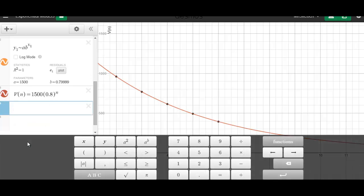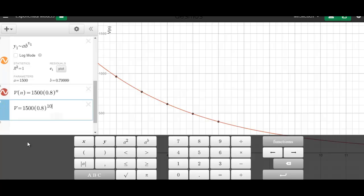In order to use our function to do that algebraically, Desmos can do this in two ways. We can say, what is the value after 10? And it will give us the answer, 161.06. It's actually more exact than what the graph showed. Or instead, we could write our equation here. V at n, or just v equals, and then we'll put in our equation. 1500 times 0.8 to the exponent, and now because we know n is 10, we'll put in the 10. And it gives us the same result, $161.06.